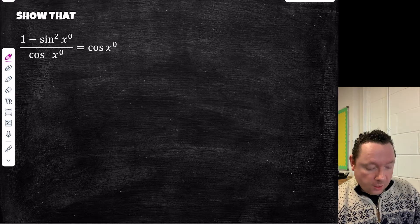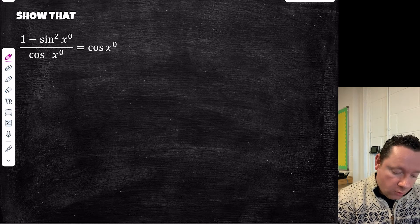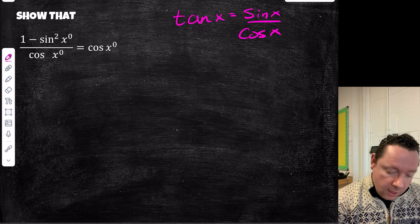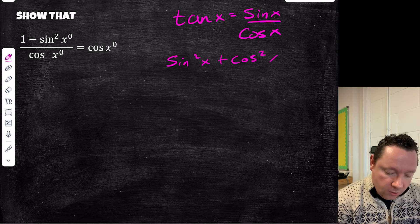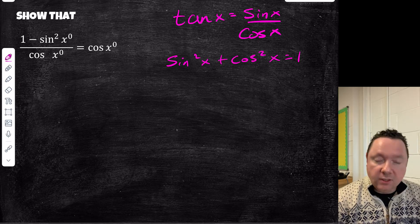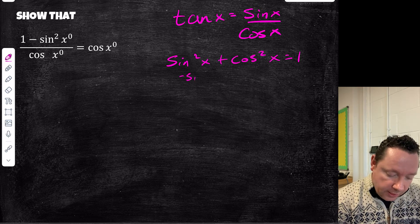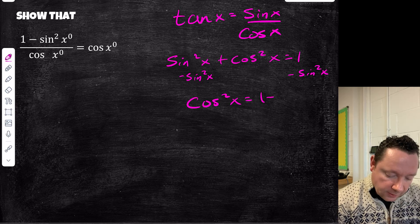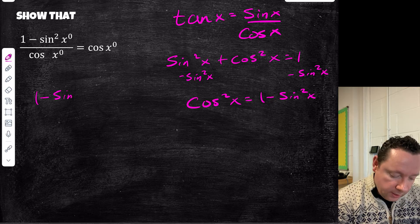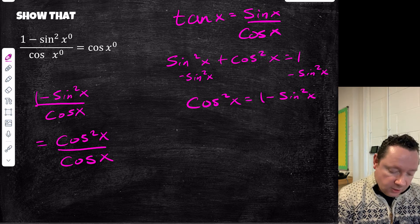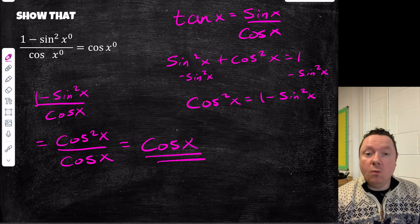Trig identity Example 1: show that (1 − sin²x) / cosx = cosx. Starting by writing down our trig identities: tanx = sinx/cosx, and sin²x + cos²x = 1. The top of the fraction, 1 − sin²x, means we rearrange the second identity: cos²x = 1 − sin²x. So (1 − sin²x)/cosx = cos²x/cosx. Since cos²x means cosx times cosx, dividing by cosx leaves cosx. Proven.